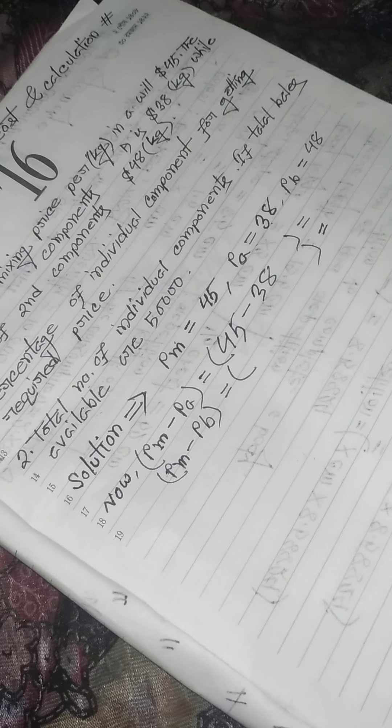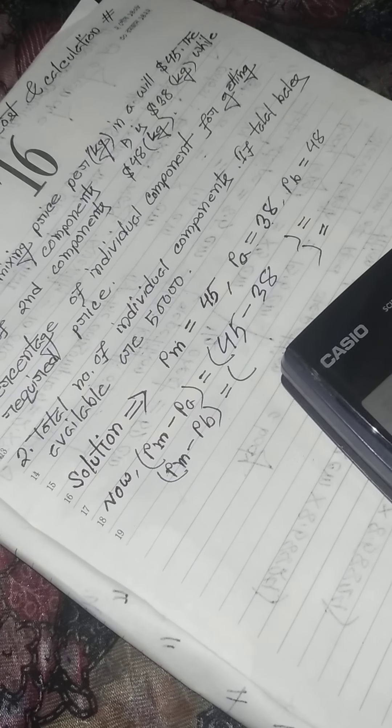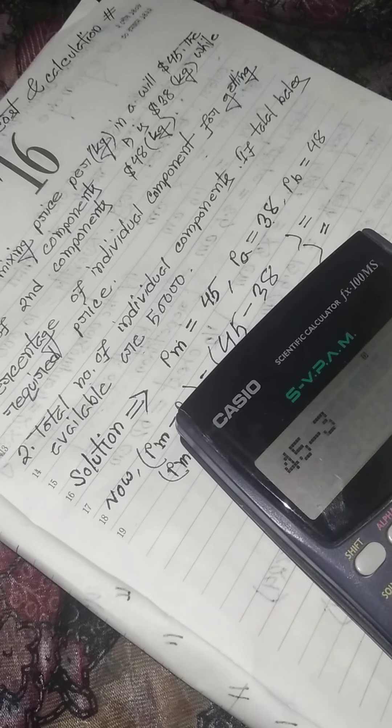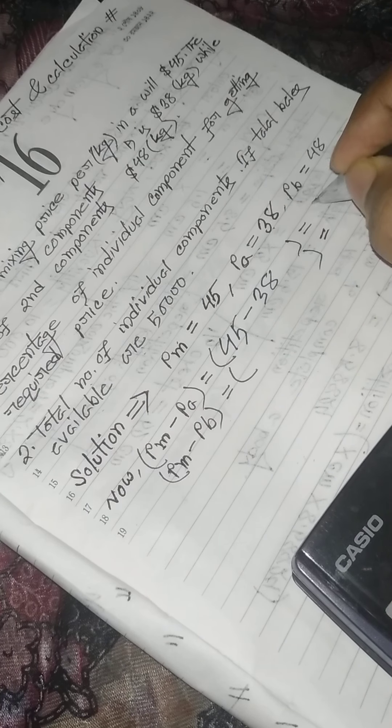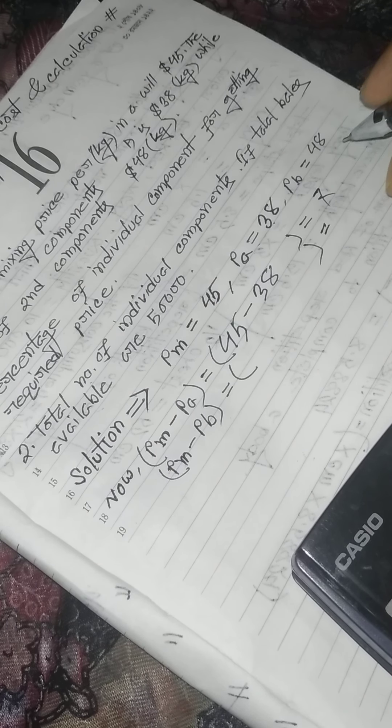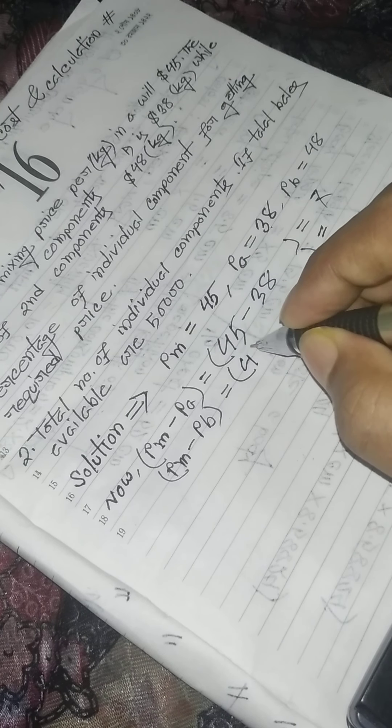Our house is 7. So, I'm going to put it in. 7. This is the price of mixing price.